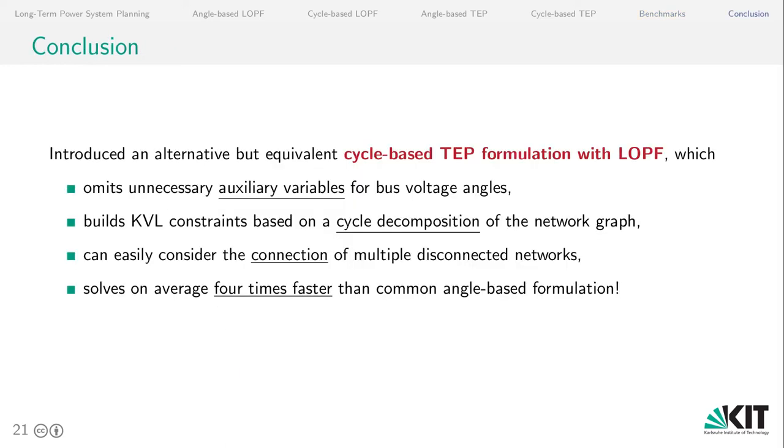Let's conclude this presentation with a brief summary. We have introduced an alternative but equivalent cycle-based transmission expansion planning formulation with linearized optimal power flow constraints. This formulation omits unnecessary auxiliary variables and builds KVL constraints based on a cycle decomposition. The advantage of this formulation is that it can easily consider the connection of multiple disconnected networks. And for most, it solves on average four times faster than the common angle-based formulation.